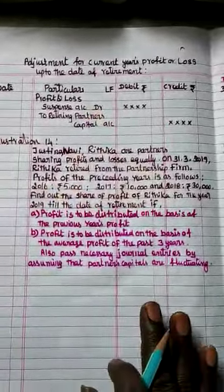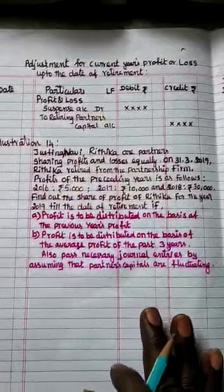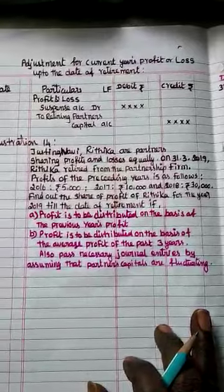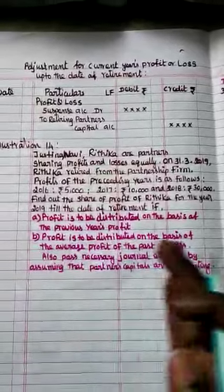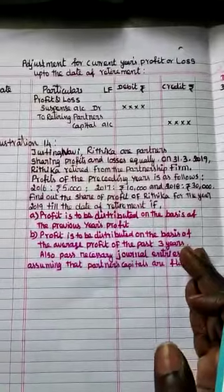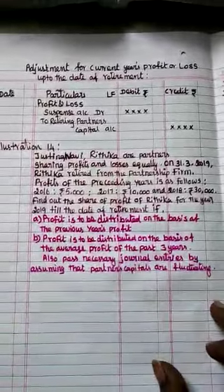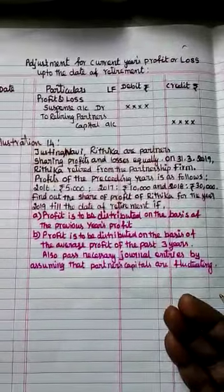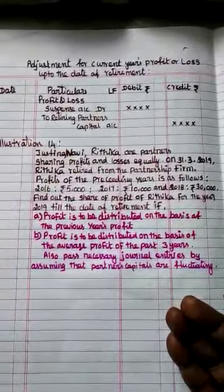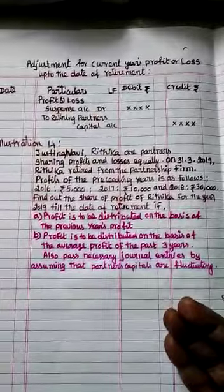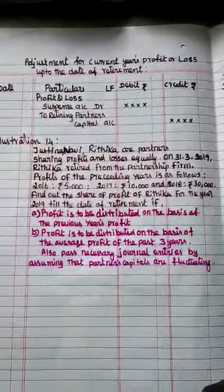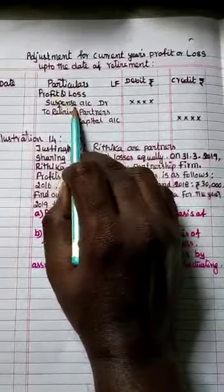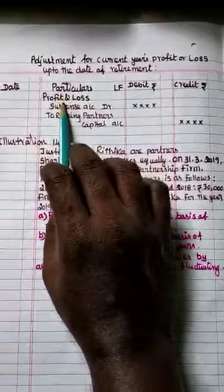If you are going to settle the profit or loss earned during the academic year up to the date of retirement, you calculate what profit or loss was made from the start of the academic year to the particular date when the partner is going to retire. That amount — the retiring partner's share alone, not the continuing partners' share — will be distributed and recorded in the Profit and Loss Suspense Account.